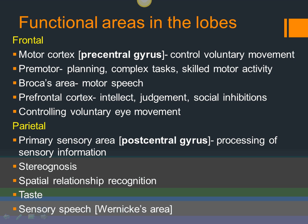There is also an area called the frontal eye field, which controls voluntary eye movement. The brain is far more complex than this simplified overview — there are many connections between parts — but this is what you need to know about the frontal lobe.